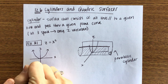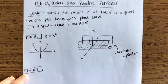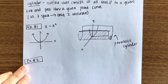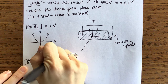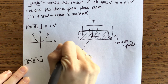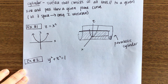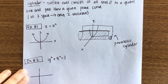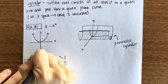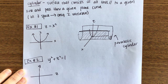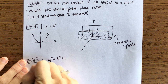We'll do one more example before we go on to quadric surfaces. The next example is y squared plus z squared equals 1. Again, sketch it in two-space first.